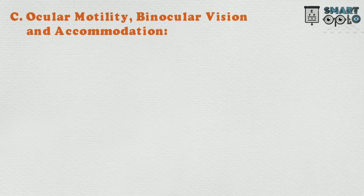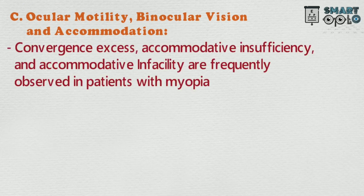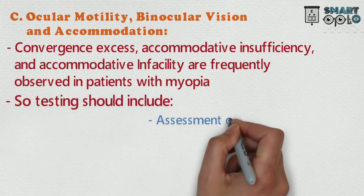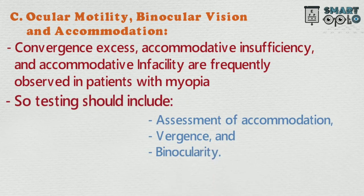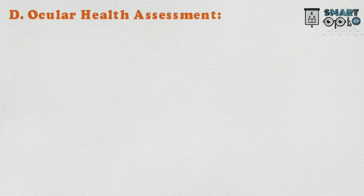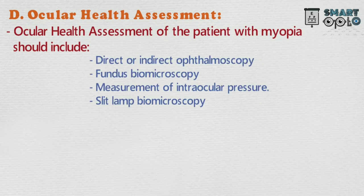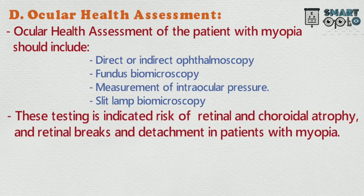C. Ocular motility, binocular vision, and accommodation: convergence excess, accommodative insufficiency, and accommodative infacility are frequently observed in patients with myopia. Testing should include assessment of accommodation, vergences, and binocularity. D. Ocular health assessment should include direct or indirect ophthalmoscopy, fundus biomicroscopy, measurement of intraocular pressure, and slit-lamp biomicroscopy. This testing is indicated for risks of retinal and choroidal atrophy, and retinal breaks and detachment in patients with myopia.